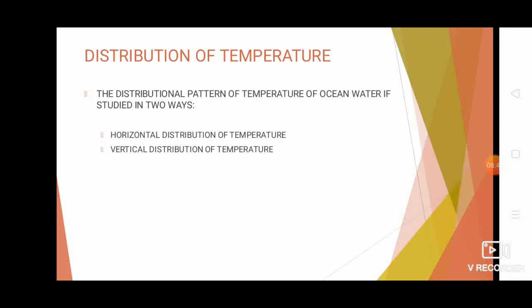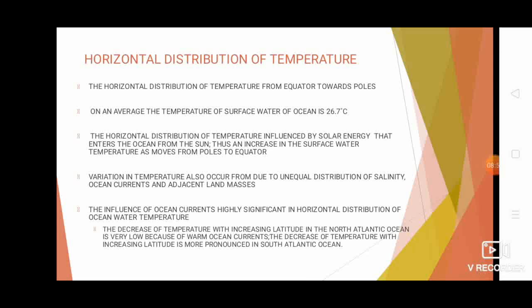The distribution pattern of ocean temperature is studied in two ways: through horizontal distribution and vertical distribution. Horizontal distribution is studied from the equator toward the poles and is mainly influenced by solar radiation. The ocean water absorbs solar energy and acts as a reservoir of heat, causing surface temperature to increase as one moves from poles toward the equator. Variations also occur due to unequal distribution of salinity, ocean currents, and adjacent land masses, with ocean currents having quite significant influence.